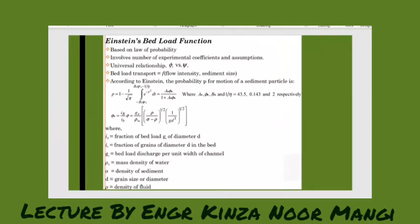Second equation for the calculation of the bed load is the Einstein bed load function, based on the law of probability, involves number of experimental coefficients and assumptions, universal relationships. This is φ versus ψ, and there is also a graph from which we will calculate these values later on.